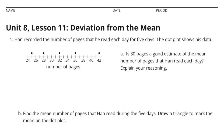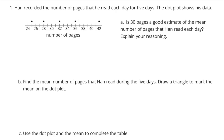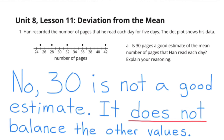Unit 8 Lesson 11: Deviation from the Mean. Number one: Han recorded the number of pages that he read each day for five days. The dot plot shows his data. Part a: Is 30 pages a good estimate of the mean number of pages that Han read each day? No, 30 is not a good estimate — it does not balance the other values.